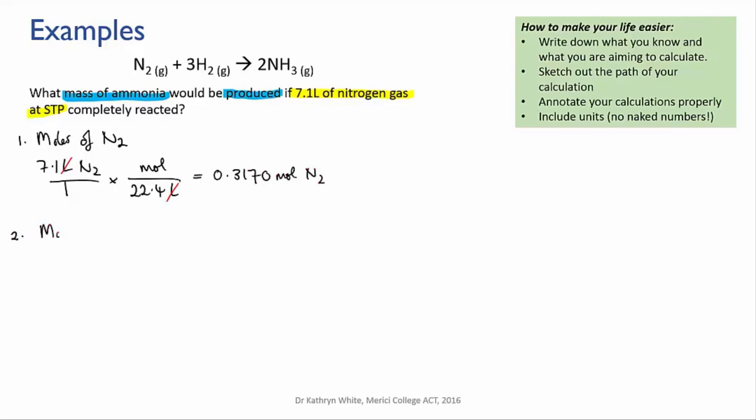Second, we'll convert those moles of nitrogen into moles of ammonia and we need the mole ratio. We look at the chemical equation and we see that the mole ratio is one mole of nitrogen to two moles of ammonia. So we need to multiply our moles of nitrogen by two. That gives us 0.6339 moles of ammonia.